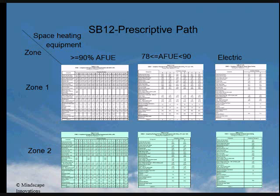The tables are also arranged according to the type of space heating system planned for the home. Where the house's space heating system has a 90% annual fuel utilization efficiency, also known as AFUE or greater, the prescriptive path should be chosen from tables 2.1.1.2.a and 2.1.1.3.a.